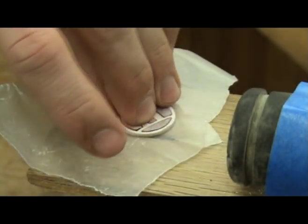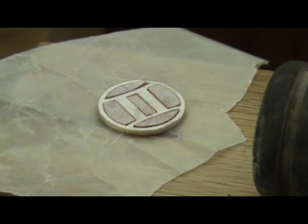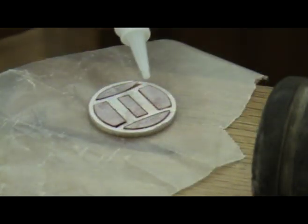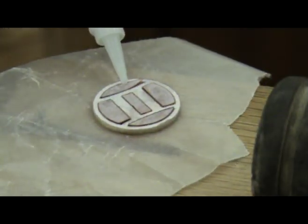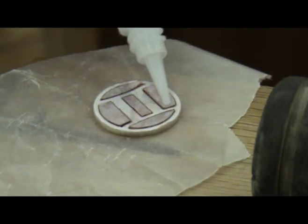When the pieces all fit, assemble the inlay on some wax paper. Now wick in some thin viscosity super glue or CA glue to make it one solid piece.